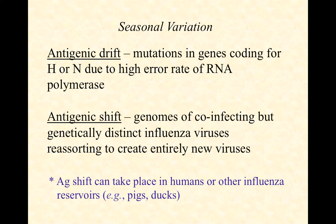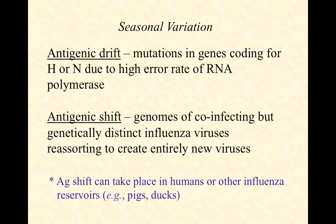If that epitope happens to be where there's been a genetic change due to the high mutation rate of RNA polymerase, all of a sudden it looks a little different and it's not going to be recognized by our immunological memory. This we call antigenic drift, because the surface antigens — hemagglutinin and neuraminidase — when there are changes in the RNA sequence for those proteins, the immunological memory stored from our last exposure through illness or vaccine is no longer valid.